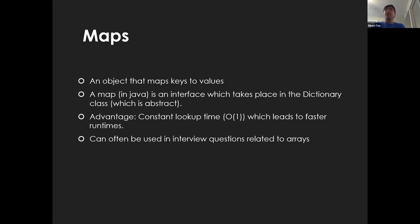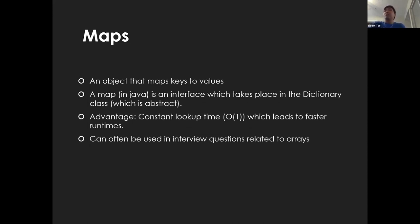Maps are a more advanced data structure. Similar to an array in that you have an index and data you're storing, but maps map keys to values. In Java, maps are an interface that takes place in the dictionary class, which is an abstract class. The advantage is amortized O(1) lookup, giving you really fast lookups, deletions, and searches. You can use them interchangeably with arrays depending on the question.